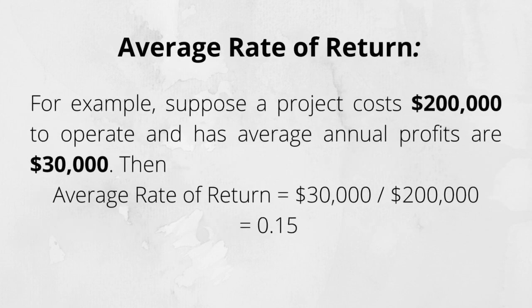For example, suppose a project costs $200,000 to operate and has average annual profits of $30,000. Then average rate of return is equal to $30,000 divided by $200,000, which equals 0.15. Neither of the two above-mentioned evaluation methods are effective for project selection, though the payback period is frequently used and exhibits reasonable value for decisions related to cash budget.